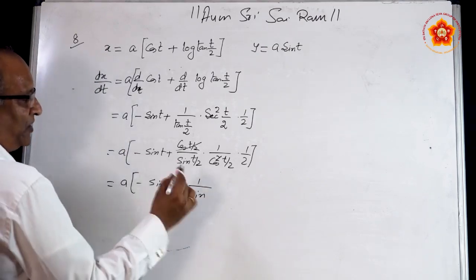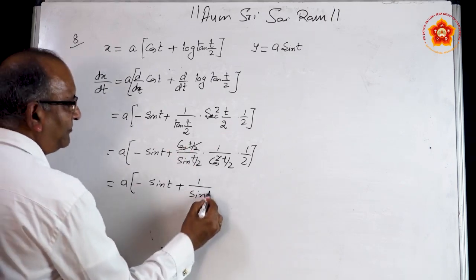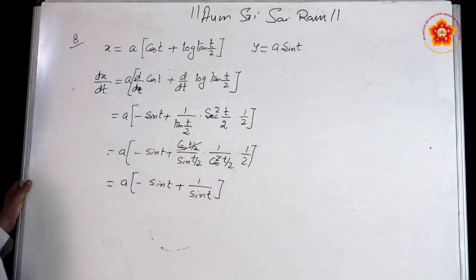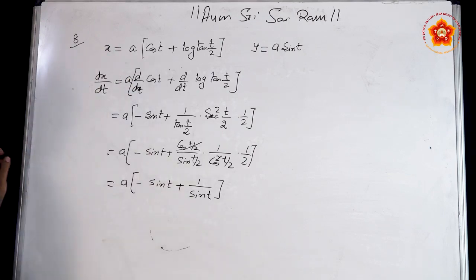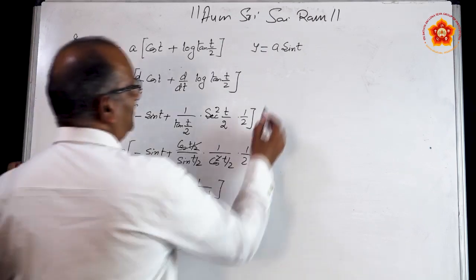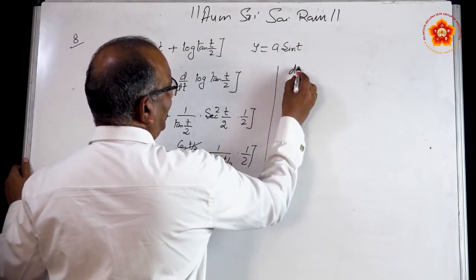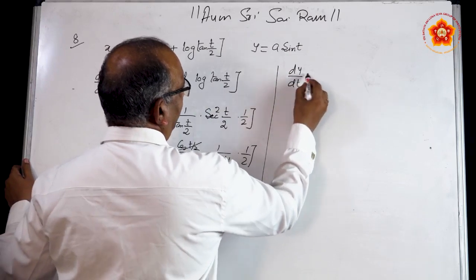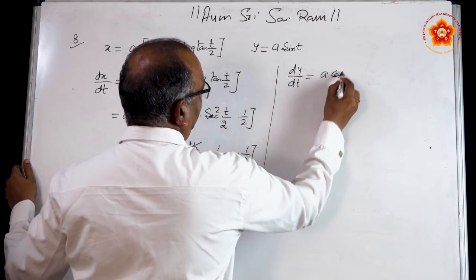Why sin(t)? Because sin(2 × t/2) gives sin(t). The second function is a very simple function; you can directly write dy/dt, which is a·cos(t).